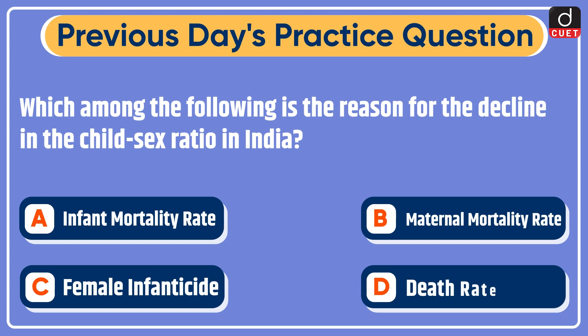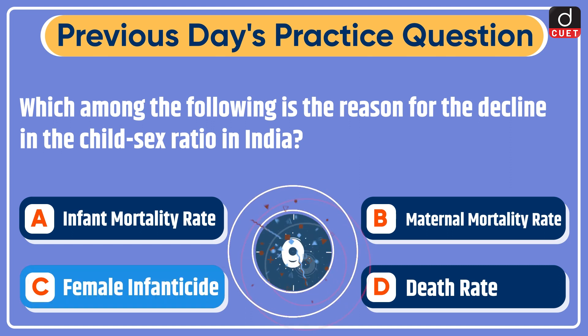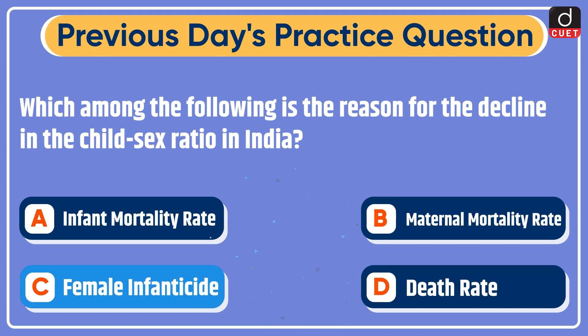The question was: which among the following is the reason for the decline in the child sex ratio in India? Options: infant mortality rate, maternal mortality rate, female infanticide, or death rate? The correct answer is option C — female infanticide.